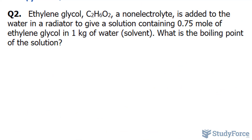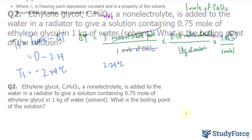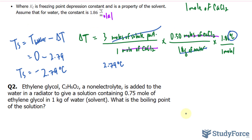Let's move on to question two. Ethylene glycol, C2H6O2, a non-electrolyte, is added to the water in a radiator to give a solution containing 0.75 moles of ethylene glycol and one kilogram of water solvent. What is the boiling point of the solution? To do this problem, we use the same technique as before, except this time ethylene glycol is a non-electrolyte, so it doesn't break down.